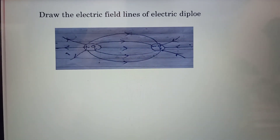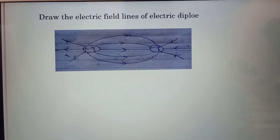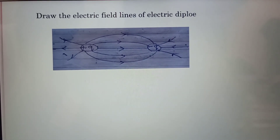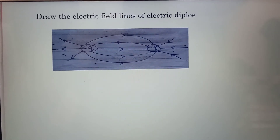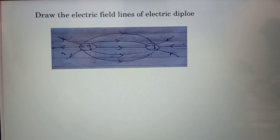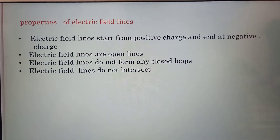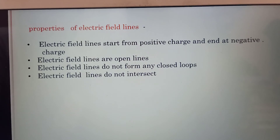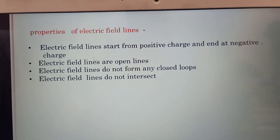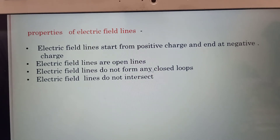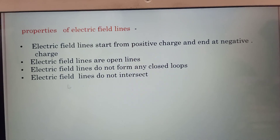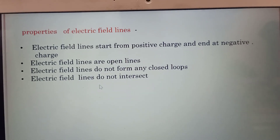Draw the electric field lines of an electric dipole. A pair of equal and opposite point charges separated by a small distance is called an electric dipole. The electric field lines start from the positive charge and end at the negative charge. Properties of electric field lines: they start from positive and end at negative charge, they are open lines, they do not form closed loops, and they do not intersect.